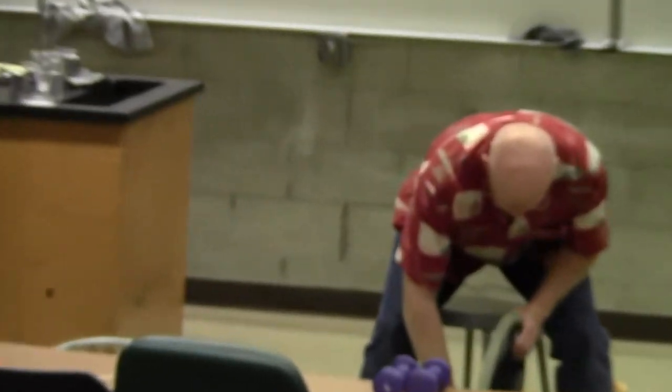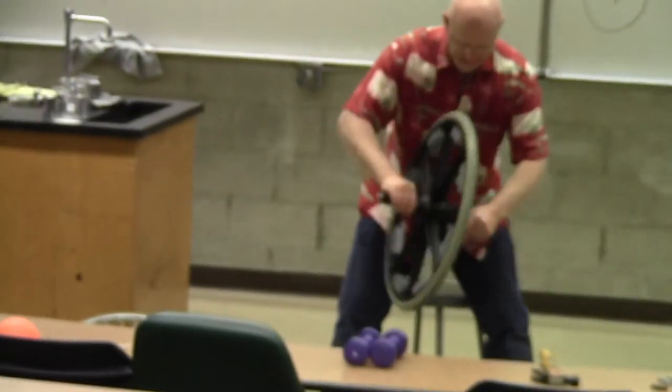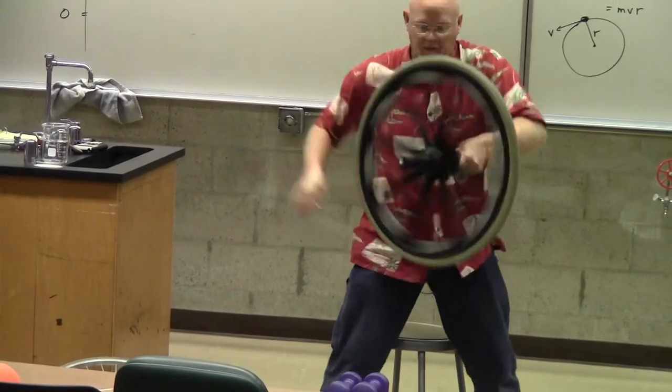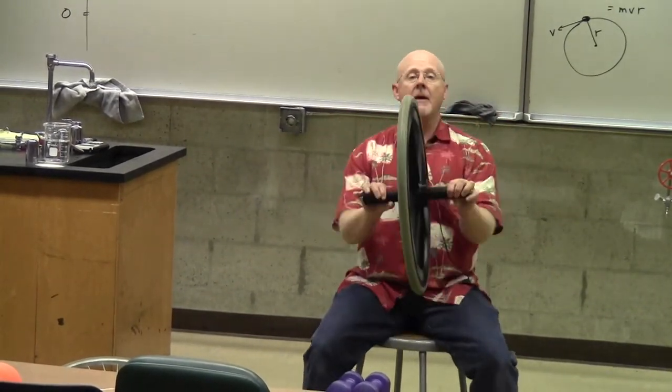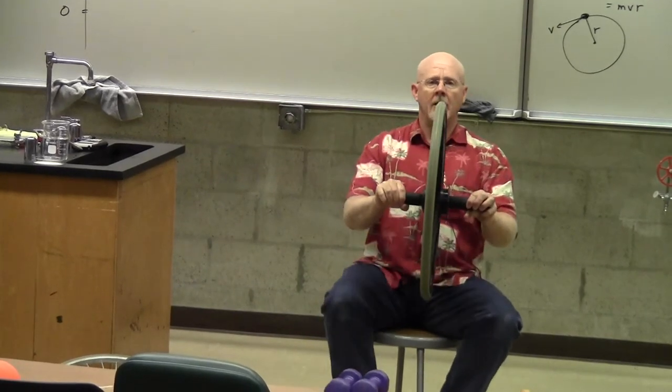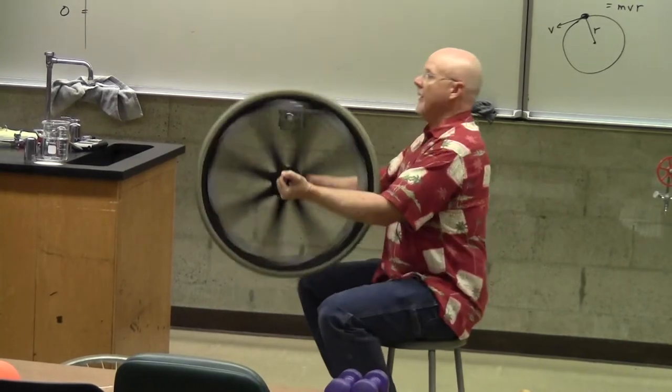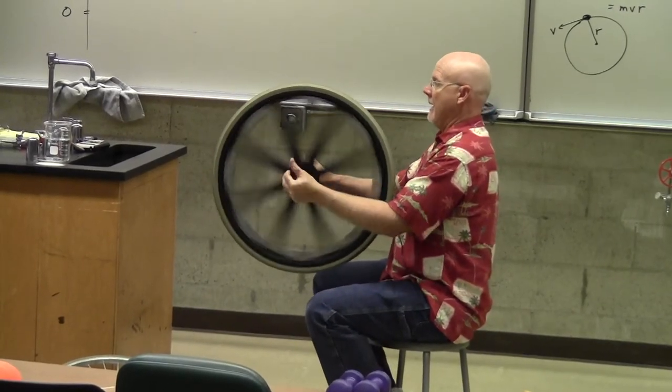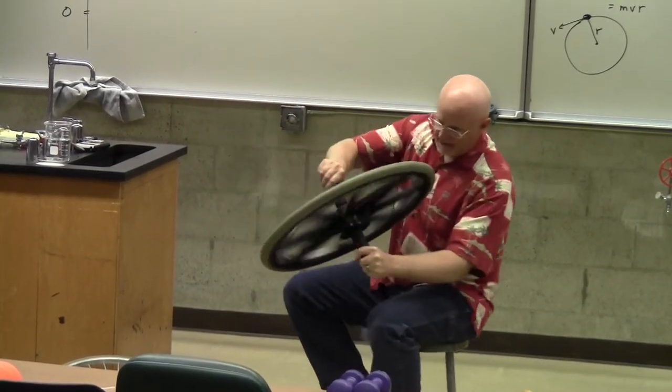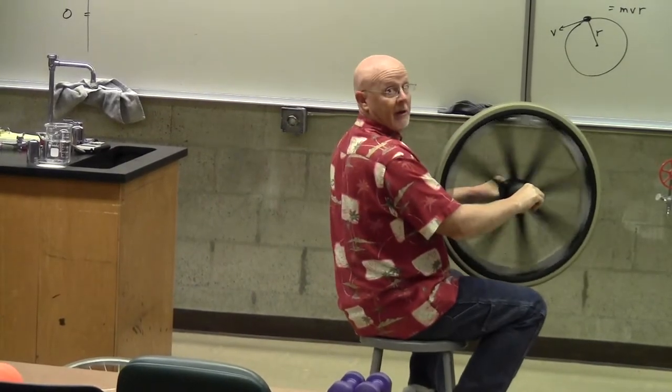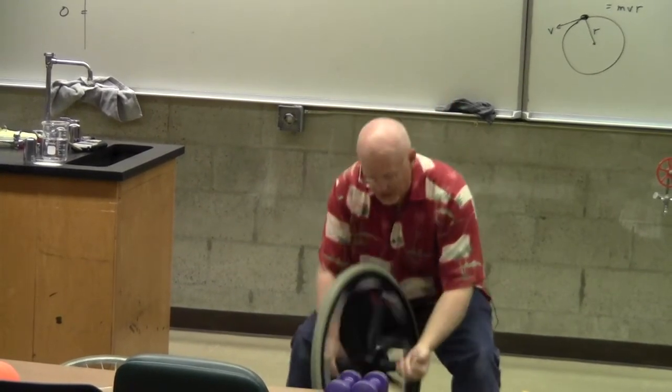And so if I give this a good spin. Let's see, good spin. So I'm riding my bike going straight. Now I want to go to the right, I lean to the right. And I go straight. And then I lean to the left. Keep turning. And then I go straight. And I lean to the right. And so it's a conservation of angular momentum.